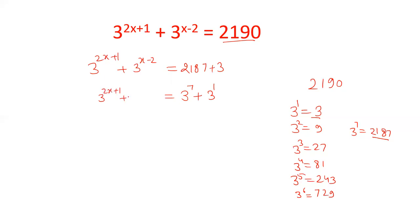Now let us compare the left hand side and right hand side. In left hand side the bigger power is 2x plus 1 and smaller power is x minus 2. So let us say 2x plus 1 equals 7. Bigger power is equal to bigger number, smaller power is equal to smaller number. So x minus 2 equals 1. We are comparing the terms. First term equals first term because the power is 2x plus 1 and here it is 7. Here the power is x minus 2 and power is 1.